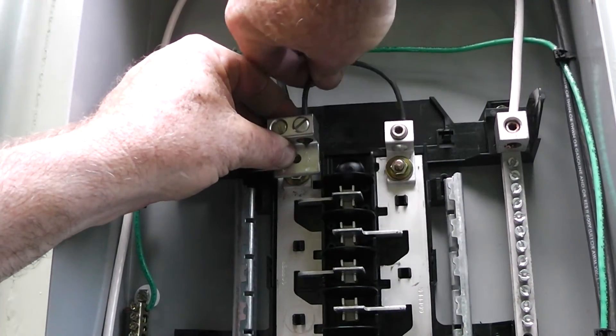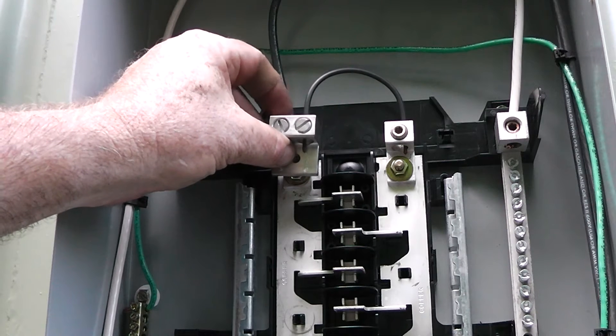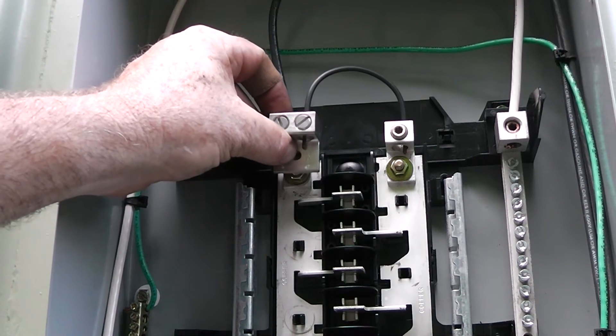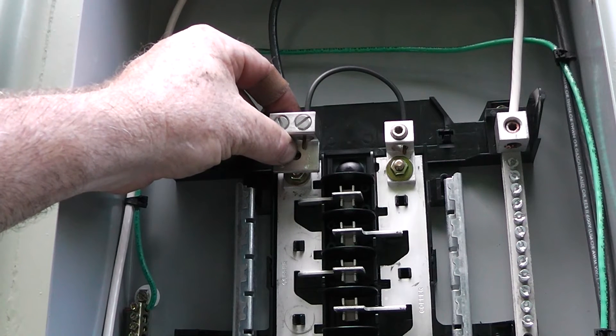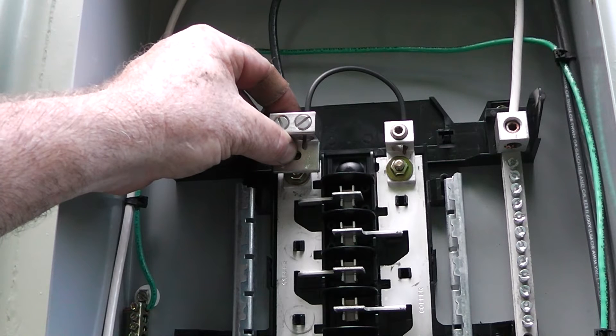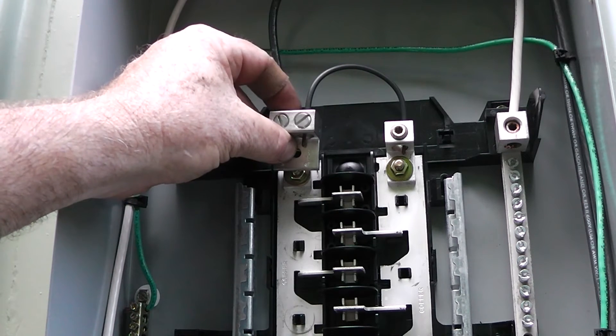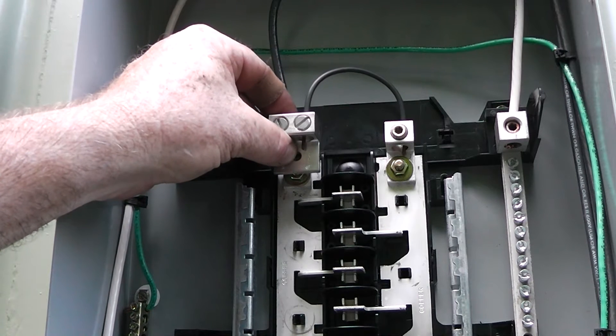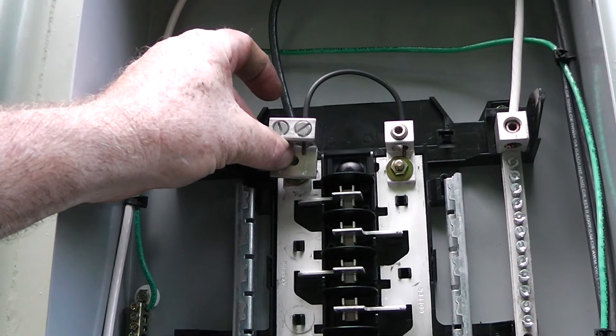We put double lugs in all the time, especially on meter sockets. We don't usually jump them out for 110 volts. Now the authority having jurisdiction might say it's not legal to have a 120 volt panel, that's their interpretation of the code. But I really don't see any problem with doing it like this.